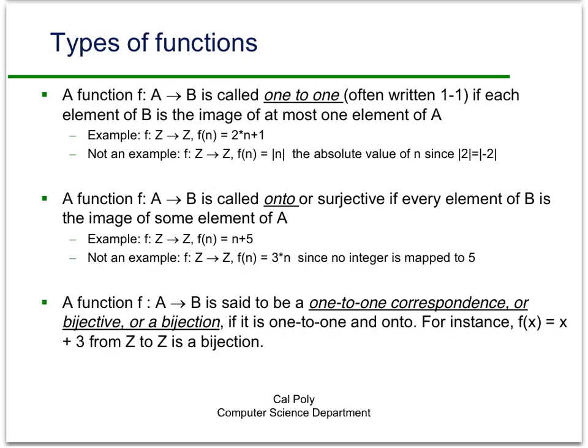Now there are some general types of functions that you need to be familiar with and hopefully you've seen these before, but if not, the definitions are pretty easy to understand. A function is called one to one, and sometimes you just write it with the numbers rather than the words, if each element of B is the image of at most one element of A. So in other words you don't have two things in A getting mapped to the same element in B.